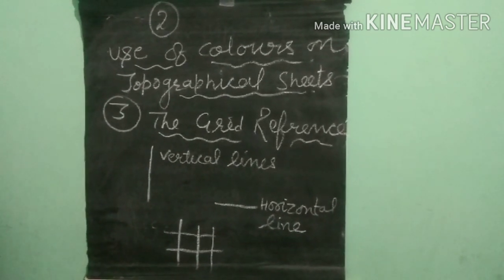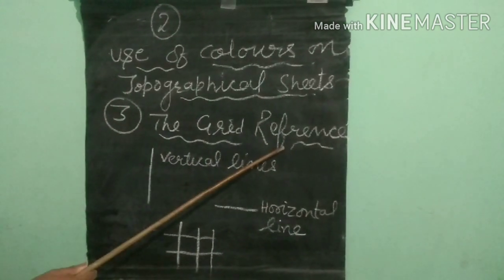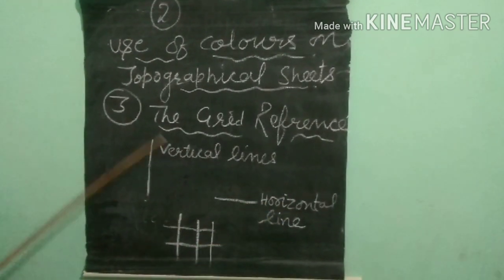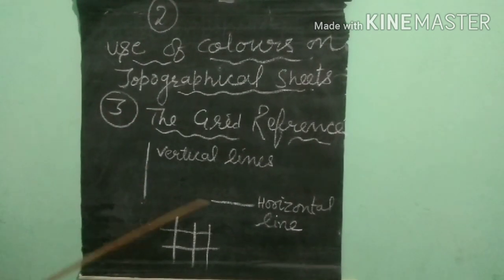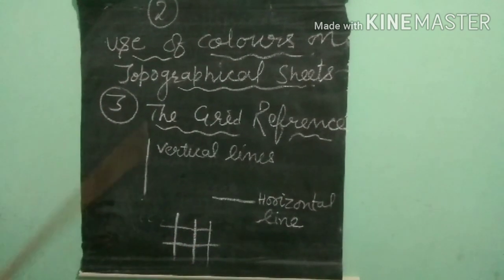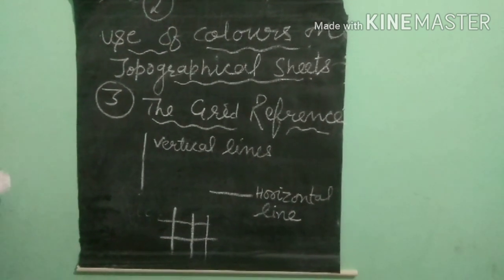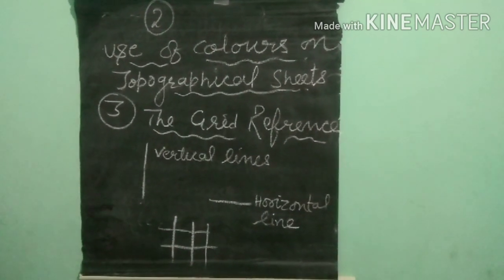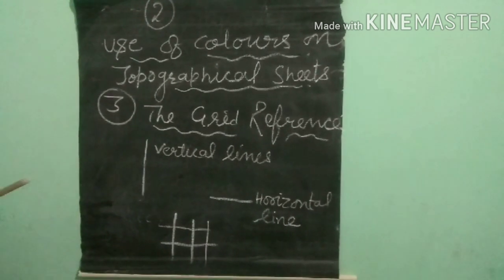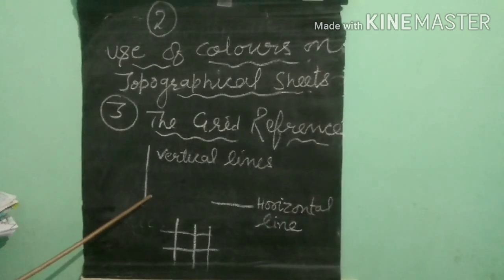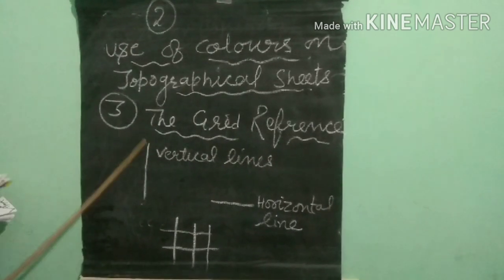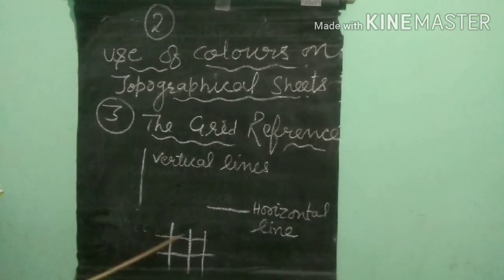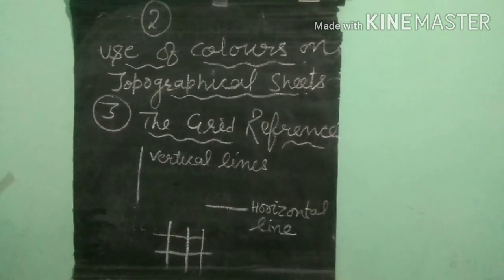The third topic is grid reference. Before starting this, we should know about vertical lines and horizontal lines. Vertical lines go in this direction and horizontal lines in this way. The network of vertical and horizontal lines is called the grid reference. The vertical lines numbered from west to east are called eastings, and the horizontal lines numbered from south to north are called northings.